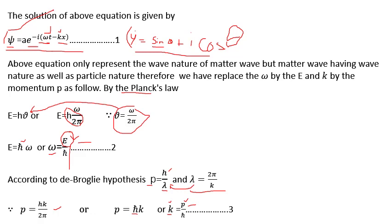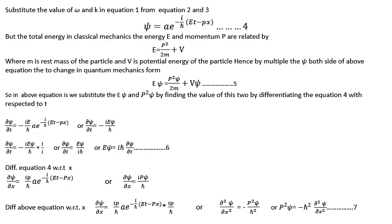We substitute the values ω = E/ħ and k = P/ħ from equations 2 and 3 into equation 1. Taking ħ as a common factor, our wave function becomes ψ = A·e^(−i/ħ)(Et − Px). Here, E·t represents wave nature and P represents particle nature, and the presence of i means this whole equation is complex — consistent with psi being a complex quantity.